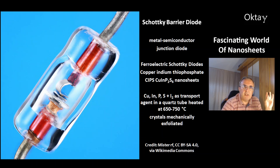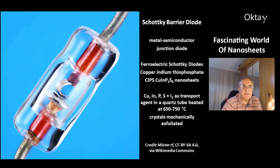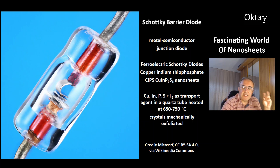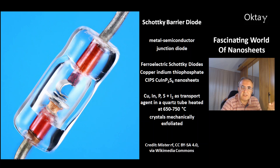This is a picture of the Schottky barrier diode — a metal-semiconductor junction diode. You can make ferroelectric Schottky diodes from copper-indium thiophosphate, also called CIPS, CuInP2S6 nanosheets. These nanosheets are made from copper, indium, phosphorus, and sulfur, by adding iodine as a transport agent for the transport reaction in a quartz tube, which is then heated to 650–750 degrees Celsius. The nanosheets are then made from the crystals by mechanically exfoliating the crystals.